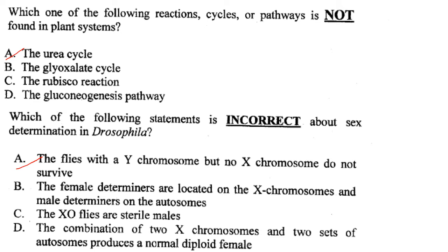Which statement is incorrect about sex determination in Drosophila? The statement that flies with a Y chromosome but no X chromosome do not survive is wrong. The female determiners are on the X chromosome and male determiners on autosomes — correct. X0 flies are sterile males — correct. Two X chromosomes and two sets of autosomes produce a normal diploid female — correct. Answer is option A.